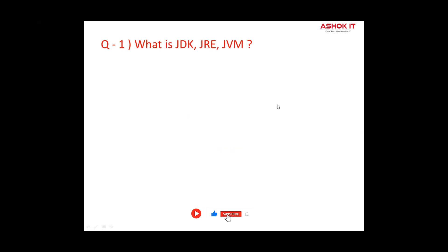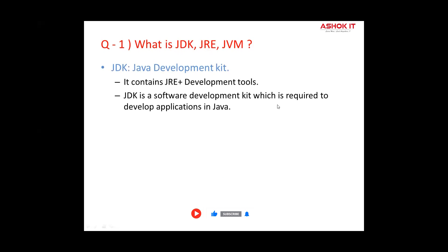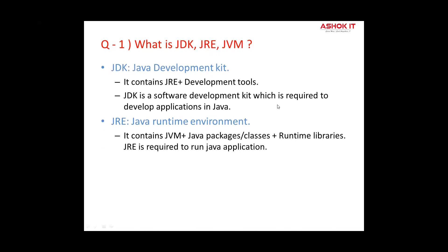What is JDK, JRE and JVM? JDK is the Java Development Kit. It contains JRE plus some development tools. JDK is used to develop an application — it contains different tools required to develop the Java application. JRE is the Java Runtime Environment. It is a software package that provides Java classes, Java Virtual Machine, and other components required to run a Java application.